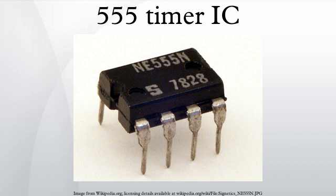In astable mode, the 555 can operate as an oscillator. Uses include LED and lamp flashers, pulse generation, logic clocks, tone generation, security alarms, and pulse position modulation. The 555 can also be used as a simple ADC, converting an analog value to a pulse length. For example, selecting a thermistor as timing resistor allows the use of the 555 in a temperature sensor; the period of the output pulse is determined by the temperature. A microprocessor-based circuit can then convert the pulse period to temperature, linearize it, and even provide calibration means.